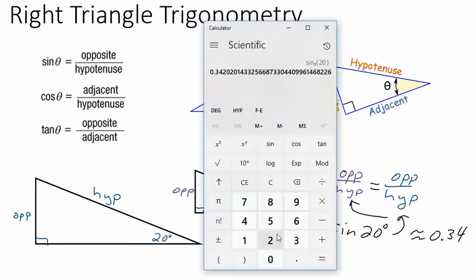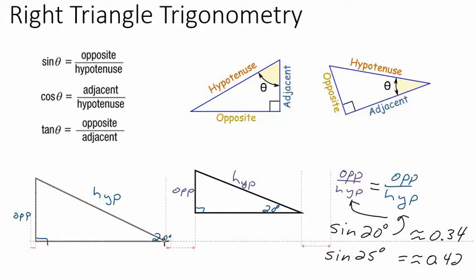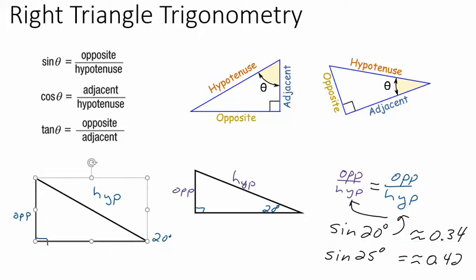What if it's a 25-degree angle? The calculator gives approximately 0.42. If we increase the angle, the opposite side gets a bit bigger in relation to the hypotenuse, so the ratio is still less than one but a bit bigger than at 20 degrees. Why do all these formulas work? Similar triangles — that's why.